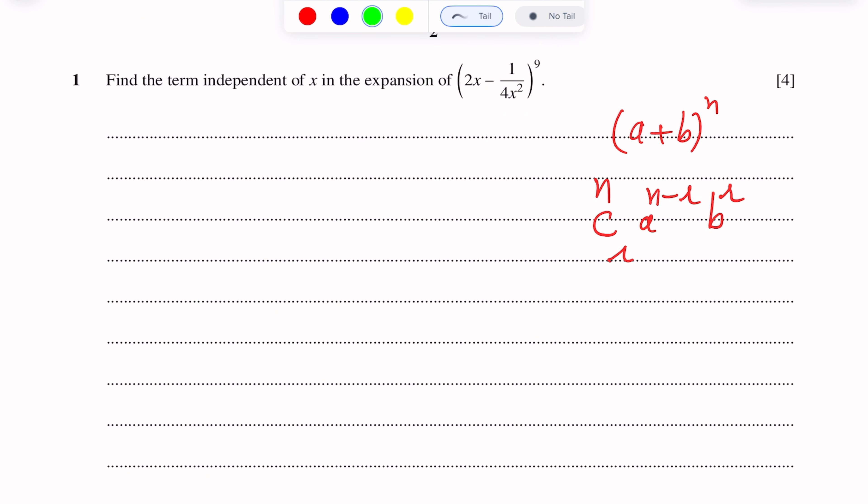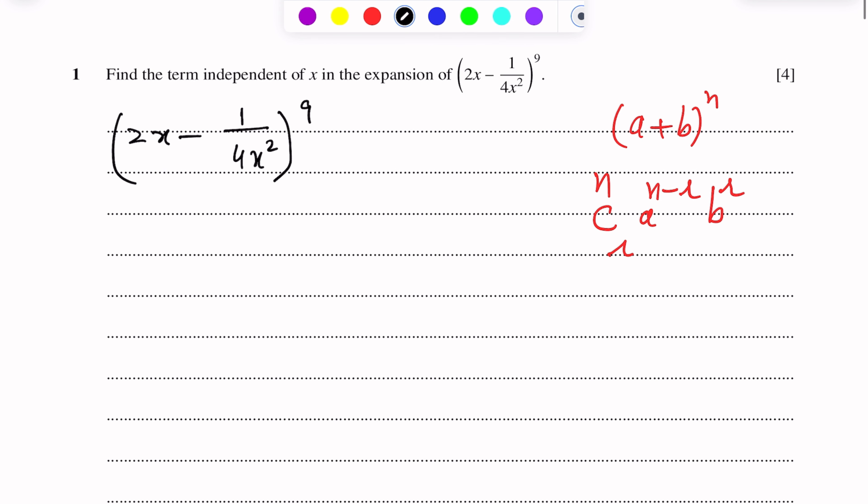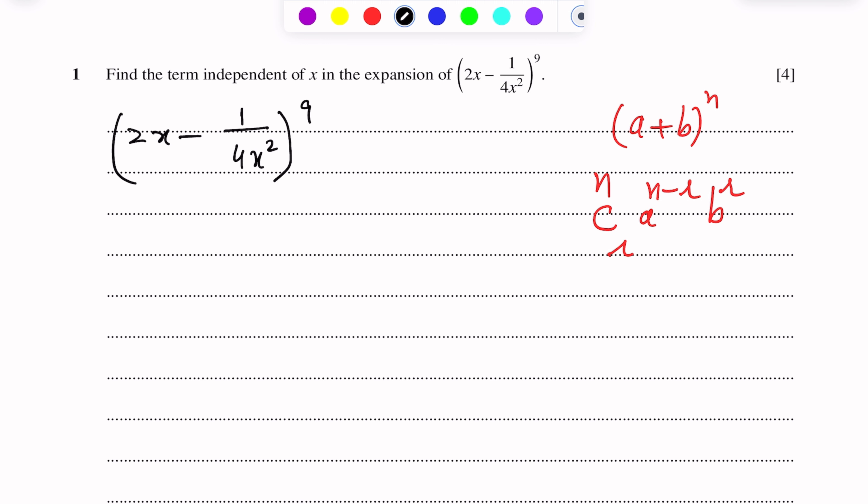Now, we have the question (2x - 1/(4x²))^9. Here, first term is 2x, second term is -1/(4x²), and n is 9. So we will use this formula. We write nCr, where n is 9, c, r.